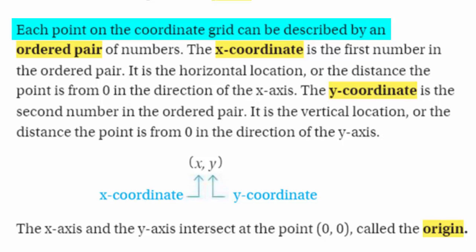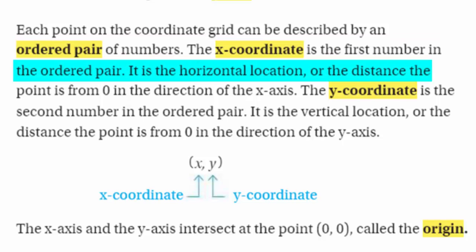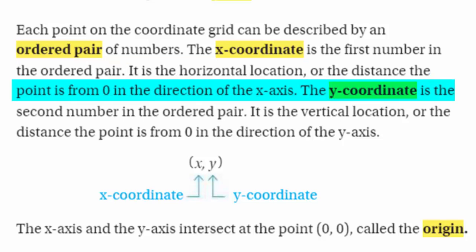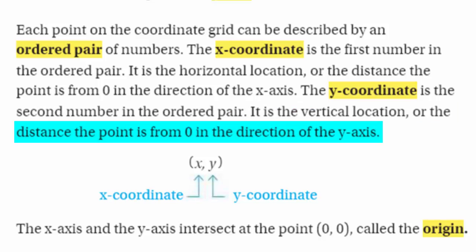Each point on the coordinate grid can be described by an ordered pair of numbers. The x-coordinate is the first number in the ordered pair. An ordered pair is like a pair of shoes — we have two numbers. One is going to be the x-coordinate and the other is going to be y. The y-coordinate is the second number in the ordered pair and it is the vertical location, or the distance the point is from zero in the direction of the y-axis.